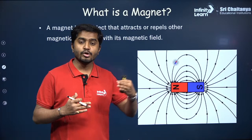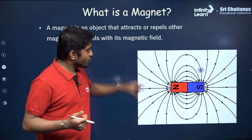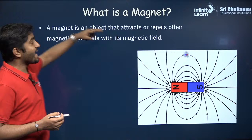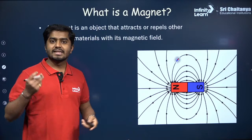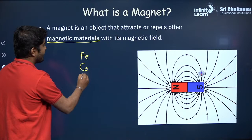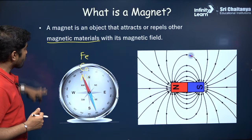So what is a magnet? You see this piece — this is called a magnet. If you bring any ferromagnetic material close to this magnet, it will get attracted. A magnet is an object which attracts or repels other magnetic materials with its magnetic field. The magnetic materials are iron, cobalt, and nickel — these are the magnetic metals. If you bring an iron piece close to the magnet, it will get attracted.